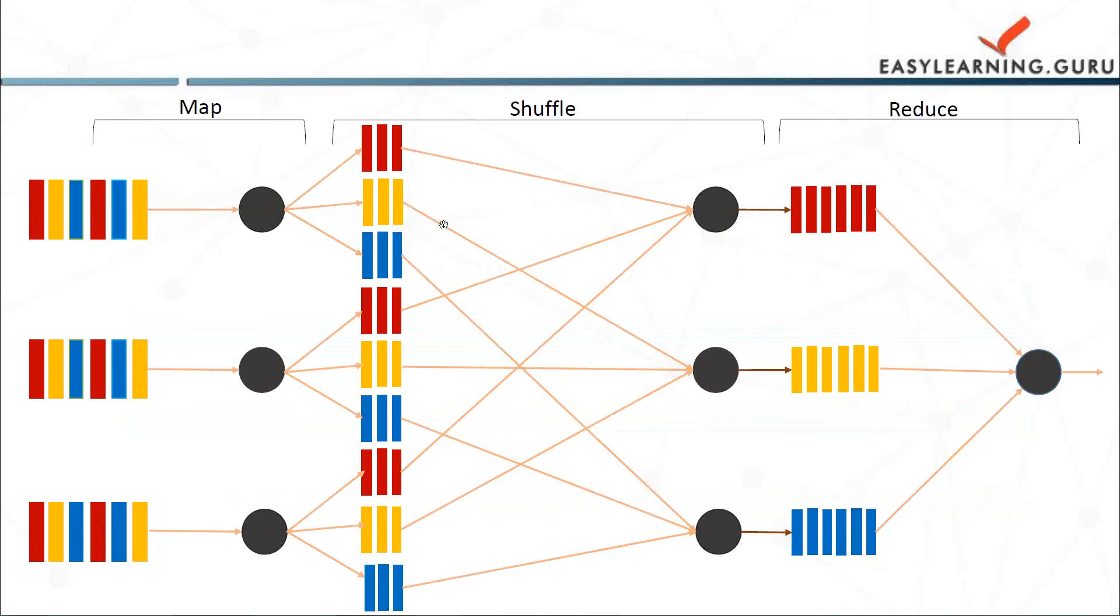Now when we talk about MapReduce, MapReduce can take advantage of data location, processing it on or near the storage assets in order to reduce the distance over which it can be transmitted. So we have the map step first. Each worker node applies the map function to the local data and writes the output to a temporary storage. A master node orchestrates that for redundant copies of input data only once is processed.